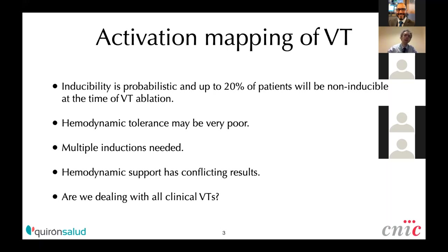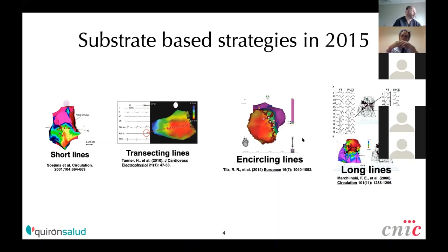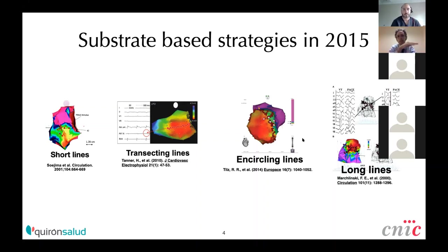With that in mind, there were a number of substrate-based ablation strategies that were developed at the time when we were thinking about how to make VT substrate ablation better. They had some remarkable results, but were never close to what was achieved in the operating room. Those were short lines transecting the scar, core isolation of the scar, and long lines across the scar — strategies with quite good results.